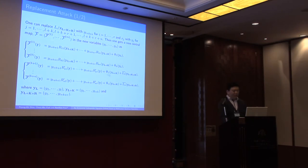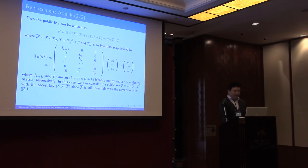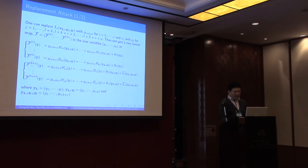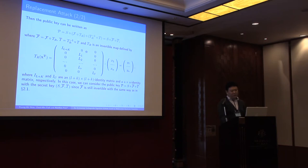In the replacement attack, one can replace a linear polynomial by a monomial. So one can get a new central map F-bar of this form. Because we set T_R like this and let F-bar equal to F circle T_R, then we get this relation. And F-bar is still invertible in the same way with F. So we can assume that the central map is F-bar when we consider the other attacks on our scheme.